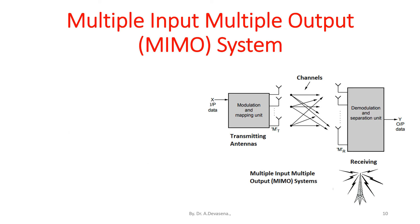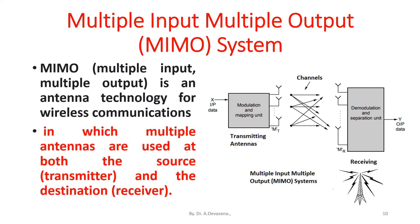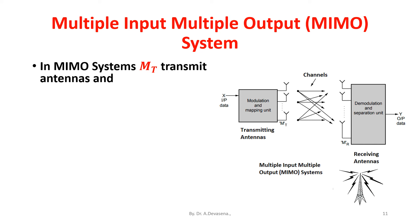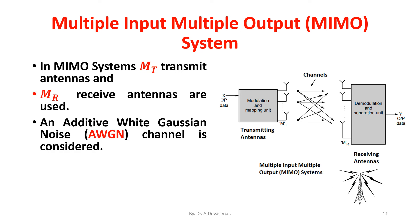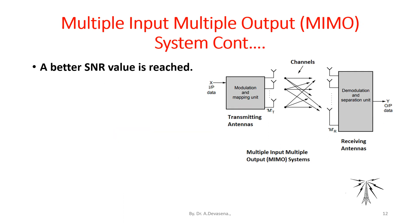Multiple input multiple output — MIMO system: MIMO is an antenna technology for wireless communications in which multiple antennas are used at both the source (transmitter) and the destination (receiver). In MIMO systems, M_T transmit antennas and M_R receive antennas are used, and an additive white Gaussian noise (AWGN) channel is considered. BPSK — binary phase shift keying modulation — is used for long distance transmission, achieving a better SNR value.